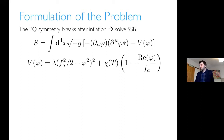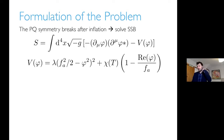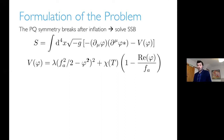The formulation of the problem: Peccei-Quinn symmetry breaks after inflation, so we have to first solve for the spontaneous symmetry breaking. In this scenario, we can't just work with the axion field — we have to work with the whole complex Peccei-Quinn field. In this case, we mostly ignore gravity except for its effect on the background expansion; we don't include the gravitational potential.